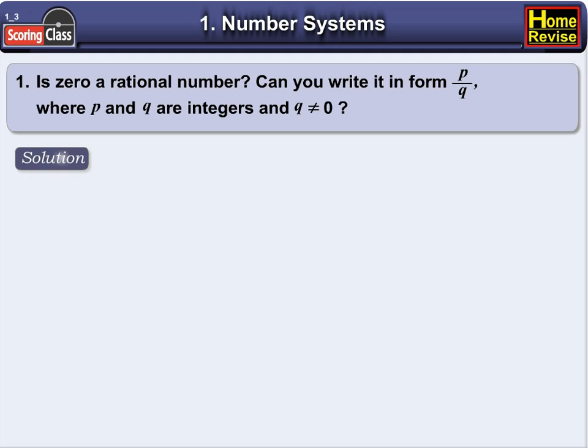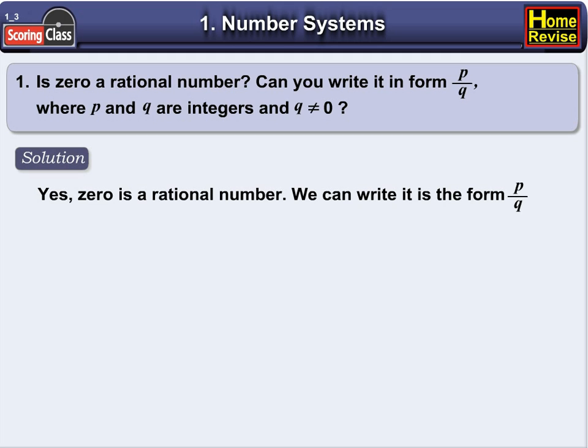Solution. Yes, 0 is a rational number, and of course we can write it in the form P upon Q.